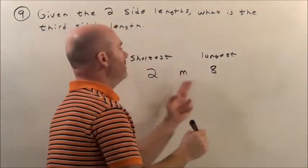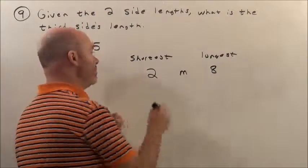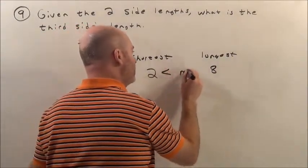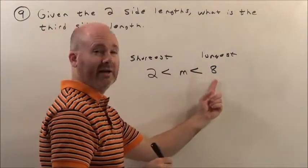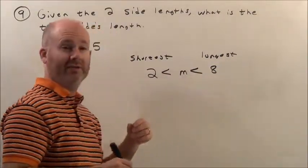So the measurement is somewhere between 2 and 8. Now, alligators always eat towards the bigger number, so they eat towards the 8. And it can't be equal to 2, nor can it be equal to 8, so right there is our answer.